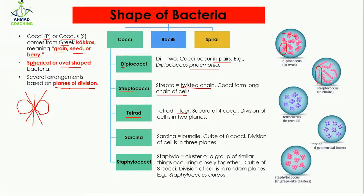Then comes the tetrad. Tetrad means four. A square of four cocci is known as a tetrad. Here you can see that four cocci are joined together. The plane of division is two — one like this and the other one like this.